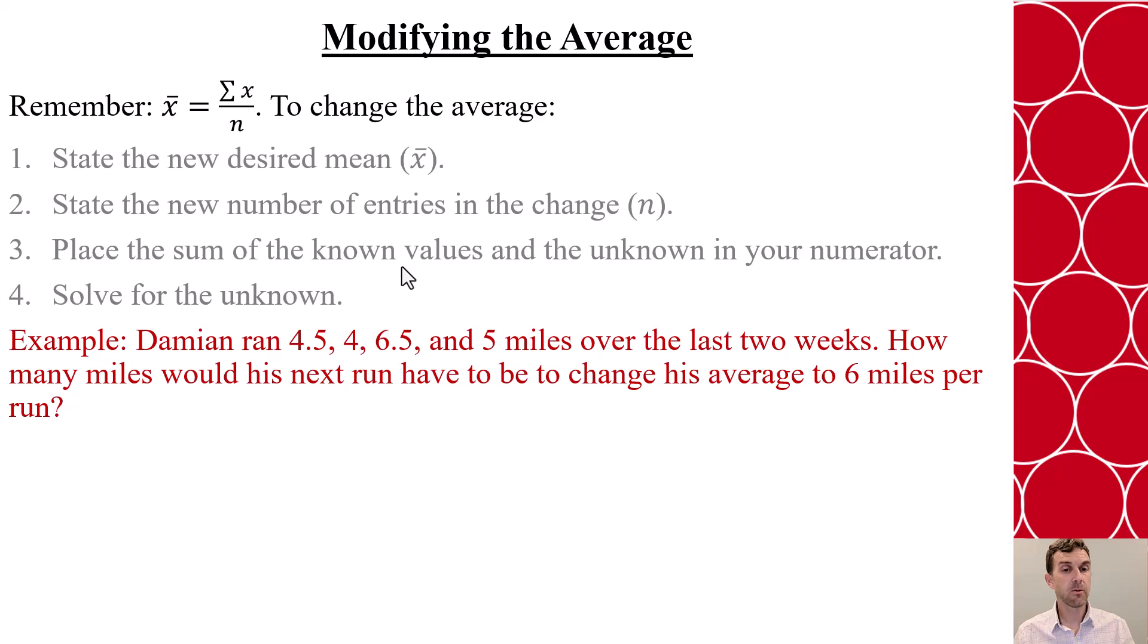Let's look at an example to help us understand. Say that Damien ran 4.5, 4, 6.5, and 5 miles over the last two weeks. How many miles would his next run have to be to change his average to 6 miles per run?